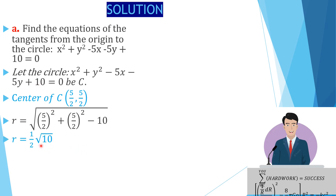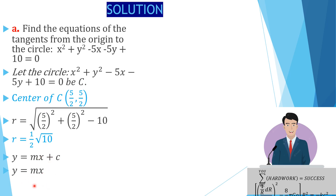The radius here is half root of 10. Since we want the equations of the tangents from the origin, the tangent is a straight line with equation y = mx + c. Because the tangent goes through the origin, the y-intercept c is zero, so we have y = mx, which we rearrange to y − mx = 0.